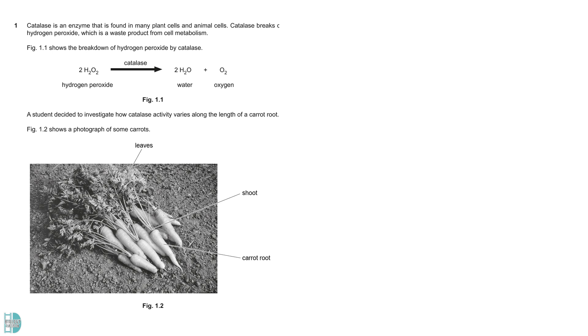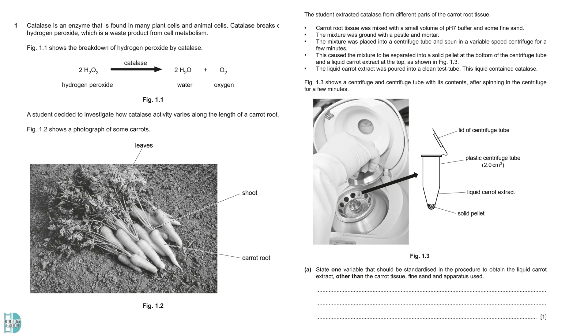Question 1 shows catalase, an enzyme catalyzing the breakdown of hydrogen peroxide. Some information about the extraction of catalase is given. You are asked to state one variable that should be standardized in the procedure to obtain the liquid carrot extract. In the first step, a buffer was used. Varying the volume would change the concentration of catalase in the resulting extract.